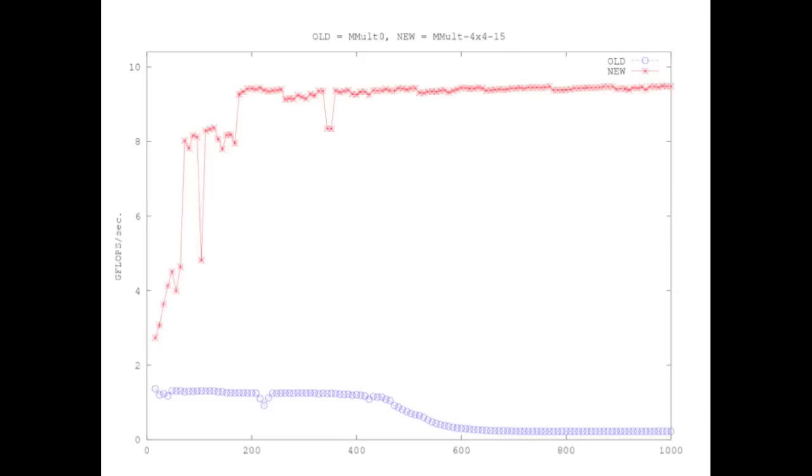Briefly, what it is, is the number of floating point operations that are being achieved by the algorithm. Now, the way we present this particular graph is that the top line in this graph represents peak performance of the processor.